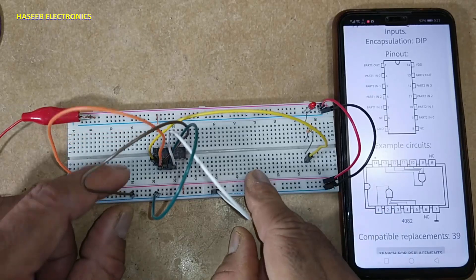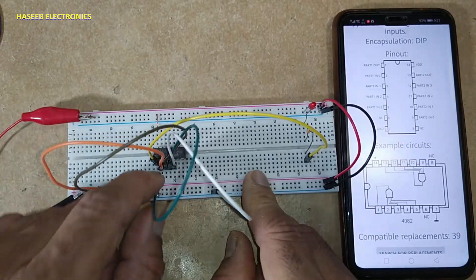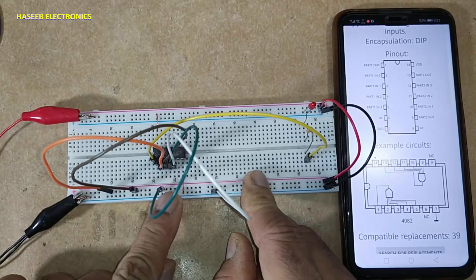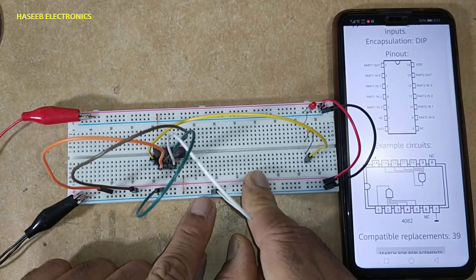When all inputs will be high, the output will be high. Three inputs high, still one low, output low.